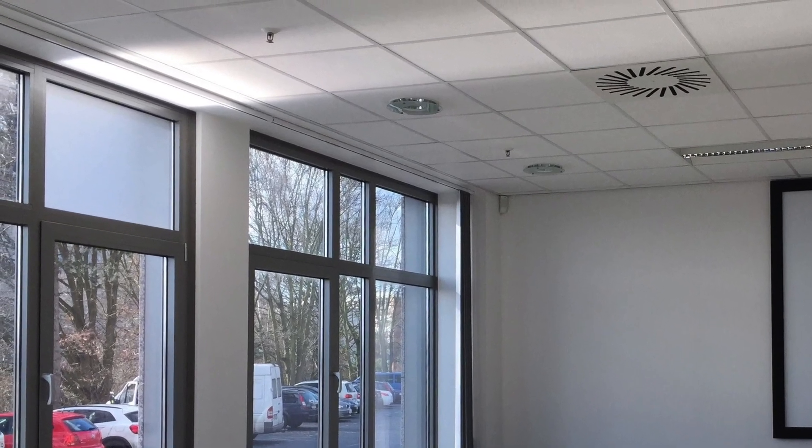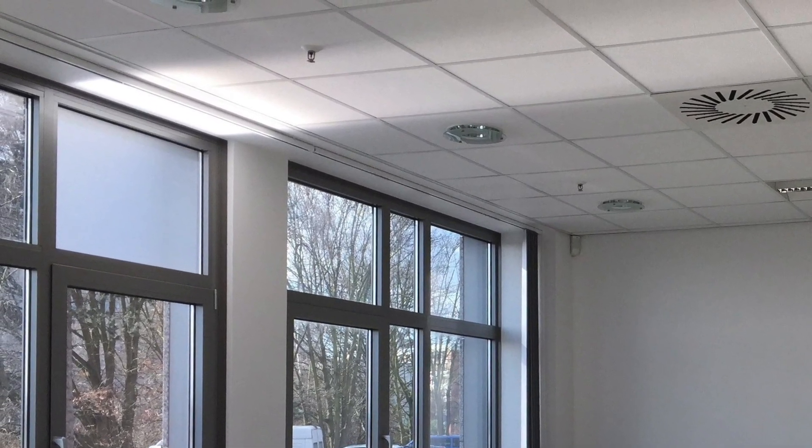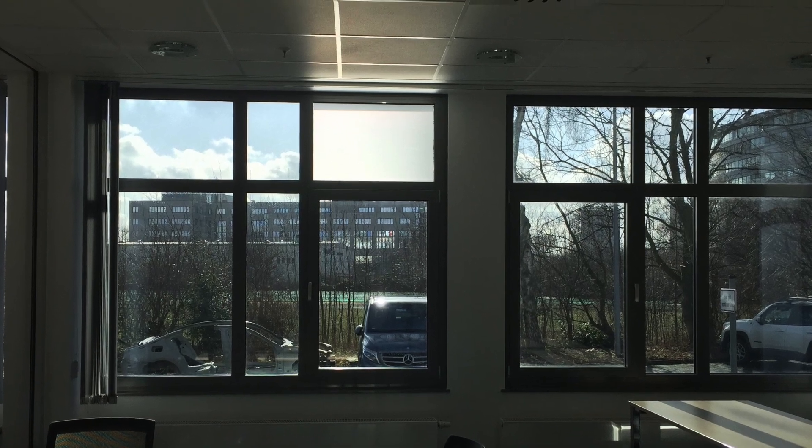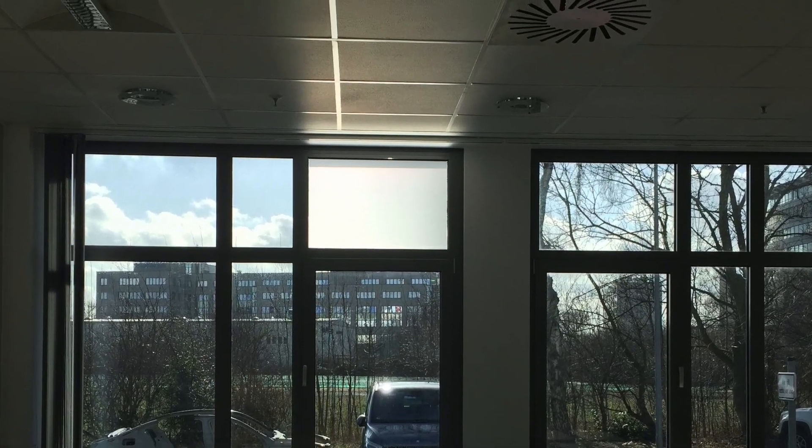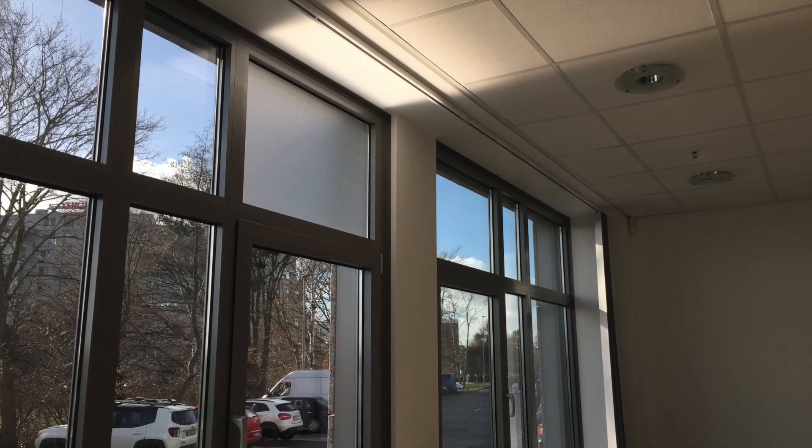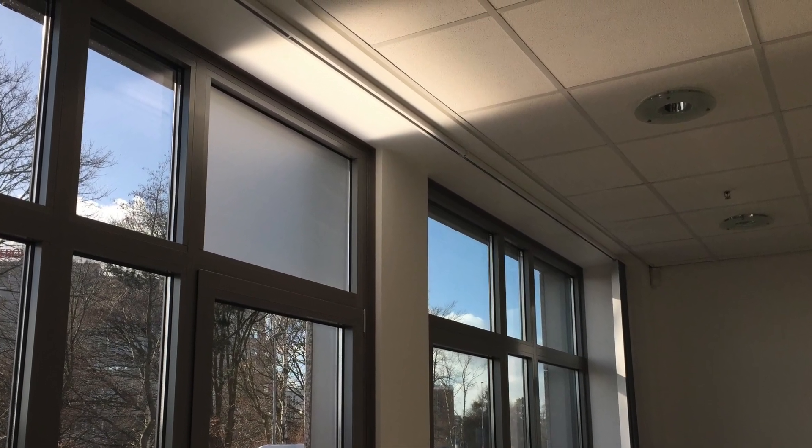3M Daylight Redirecting Film is a simple and effective window film that brings natural daylight deeper into buildings. It provides real benefits to those occupants within the building and saves energy by reducing the need for artificial light. This video takes you through the simple step-by-step installation process.